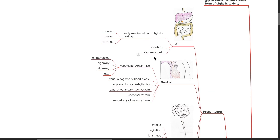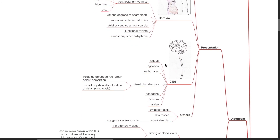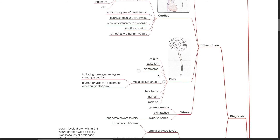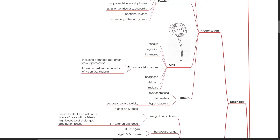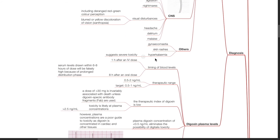Additional symptoms include diarrhea, abdominal pain, arrhythmias such as extrasystoles, bigeminy, trigeminy, various degrees of heart block, supraventricular arrhythmias, atrial or ventricular tachycardia, junctional rhythm, or almost any other arrhythmia. CNS effects include fatigue, agitation, nightmares, visual disturbances such as deranged red-green colour perception, blue or yellow discoloration of vision, headache, delirium, malaise, gynecomastia, skin rashes, and hyperkalemia which suggests severe toxicity.